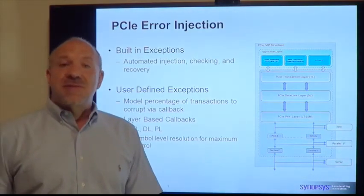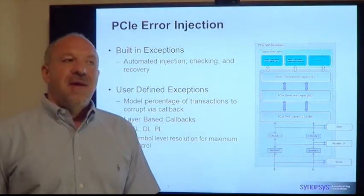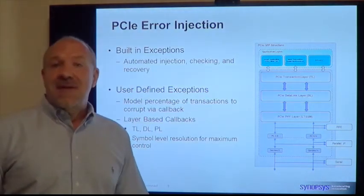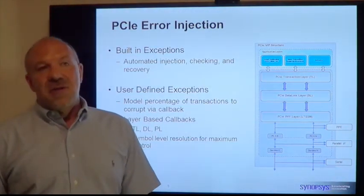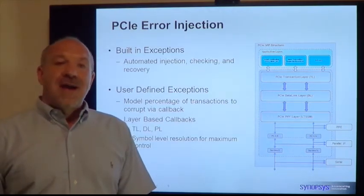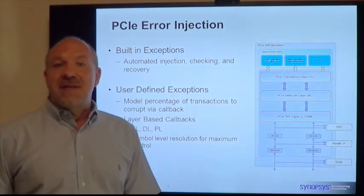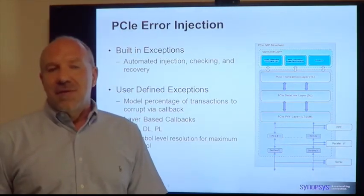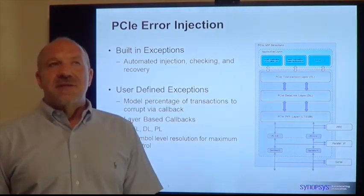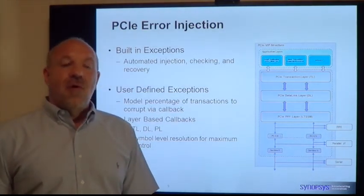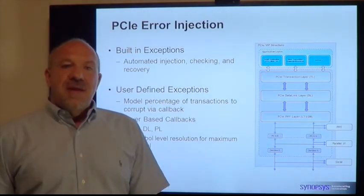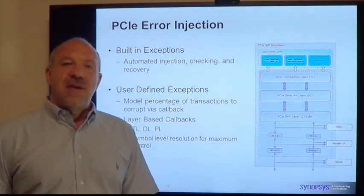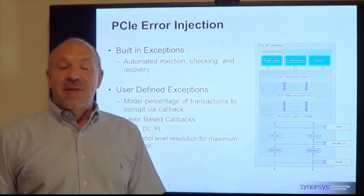On the other side, you may have very special scenarios that require complex combinations of events to happen. In such cases, we give you the ability to write your own error injections via user-defined exceptions. There are a couple of options, all callback based. One callback solution is a factory model that you can register with any particular layer, giving you full access to every packet going through the system. You can easily randomize the number of error injections — for instance, if you're interested in duplicate sequence numbers, an LCRC error, or any other built-in errors, you can tell us that 10% of the time you want one of those to happen. You can set up your own distributions and automatically handle the error injection. We also give you access at the symbol level, so you can get the lane striping and corrupt any one of those symbols coming across.